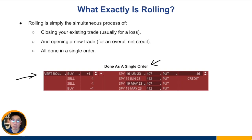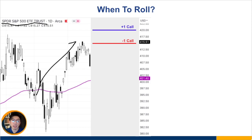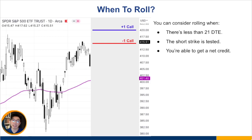Now that we know what rolling is, the question is when do you roll it? When is the optimum time to roll your credit spreads? For example, let's say you are bearish on SPY, the index ETF. The market has gone up quite a bit and come back down, so you enter a bear call spread — in this example, the 415–420 bear call spread. When do you roll? You can consider rolling when there's less than 21 days to expiration. This is the marker I always use.